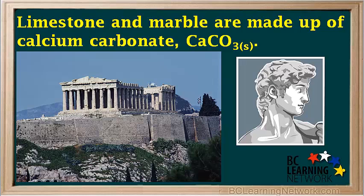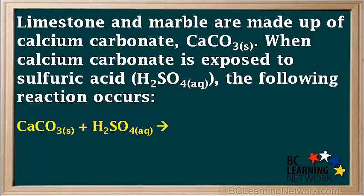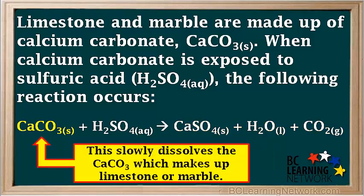Acid precipitation can also damage buildings and statues made of limestone or marble. Limestone and marble are made up of calcium carbonate, CaCO₃. For example, when calcium carbonate is exposed to sulfuric acid, H₂SO₄ (aqueous), the solid CaCO₃ reacts with aqueous H₂SO₄ to form CaSO₄ solid, liquid water, and CO₂ gas. This process slowly dissolves the calcium carbonate that makes up limestone and marble.